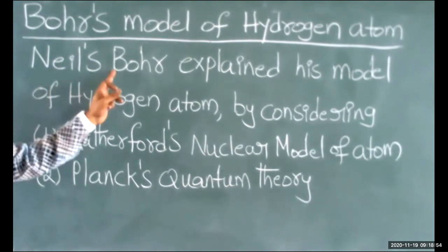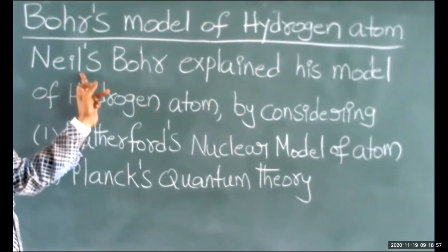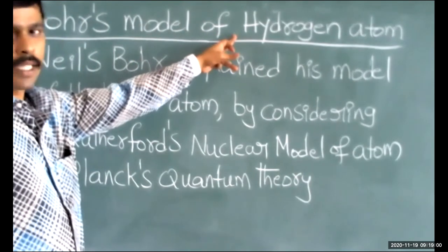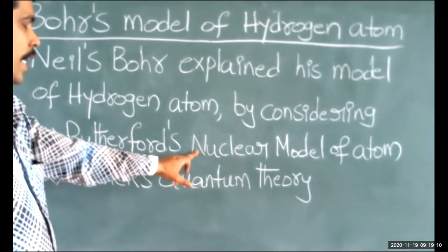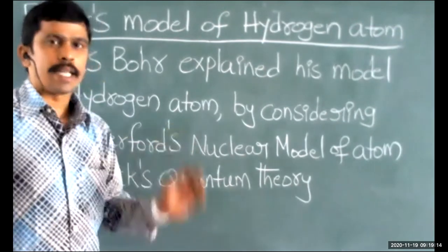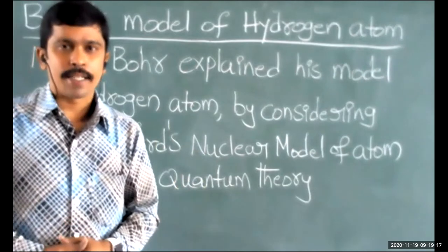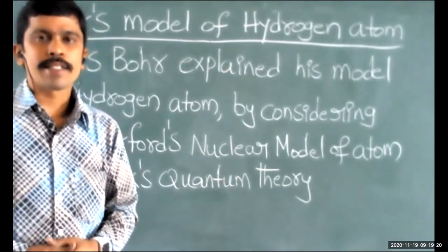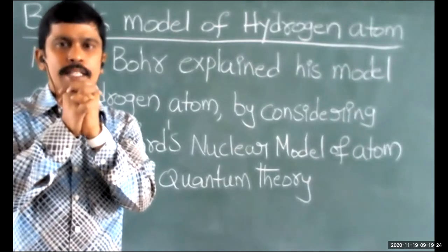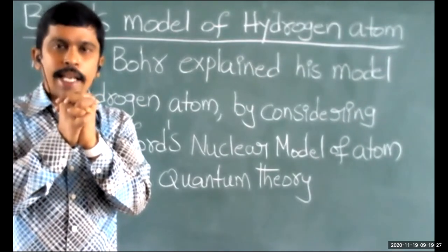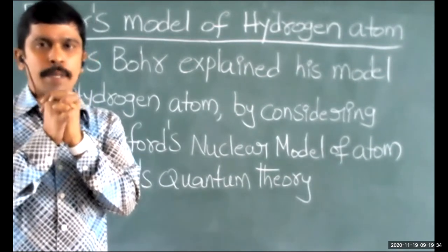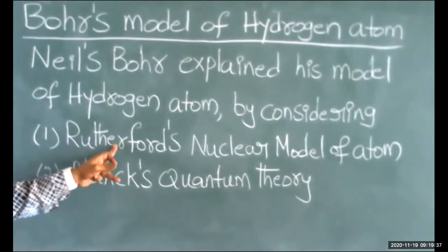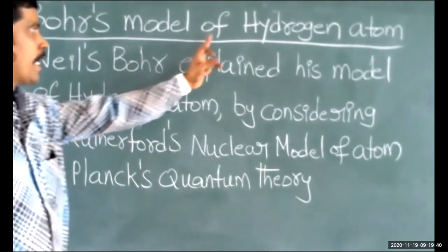The scientist's name is Niels Bohr. He is going to explain the atomic model of hydrogen atom. Niels Bohr explains the atomic structure of hydrogen atom using two theories. The first theory is Rutherford's nuclear model of atom, where most of the mass of the atom is concentrated at the center — the nucleus — and electrons revolve around the nucleus in circular paths.